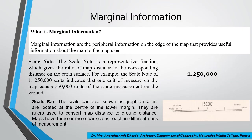Marginal information is basically the peripheral information on the edge of the map that provides useful information about the map to the map user. It encompasses, among other things, the scale. The scale may be provided in representative fraction form — that is RF — or it might also be given as a verbal scale, for example one centimeter is equal to 250 meters or one centimeter is equal to 500 meters.